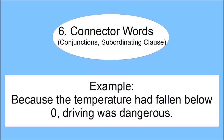The sixth way to start a sentence uses connector words, also called conjunctions — and that part of the sentence is called a subordinating clause. An example is: because the temperature had fallen below zero degrees, driving was dangerous. Other connector words include but, though, also, and albeit.